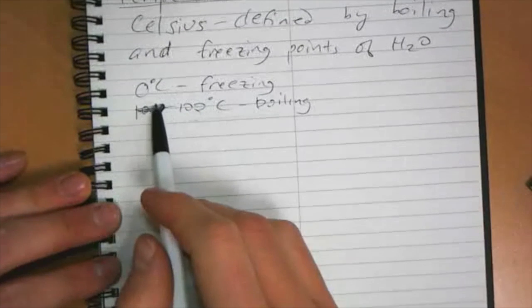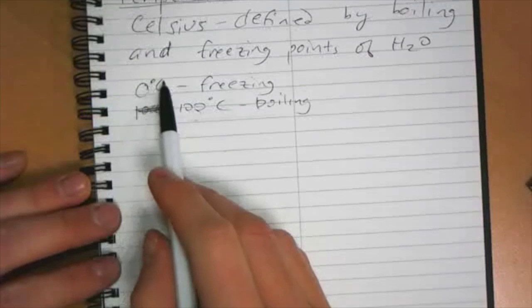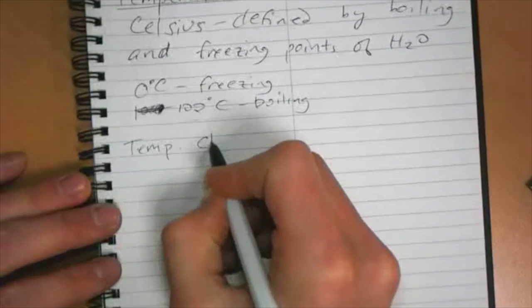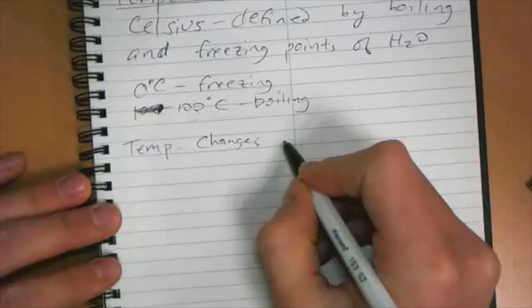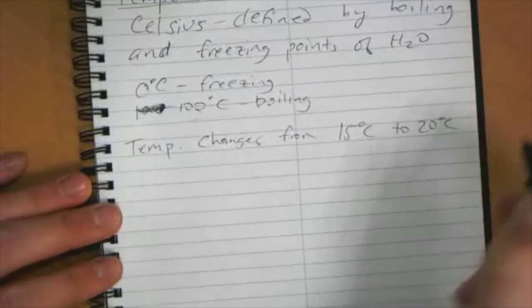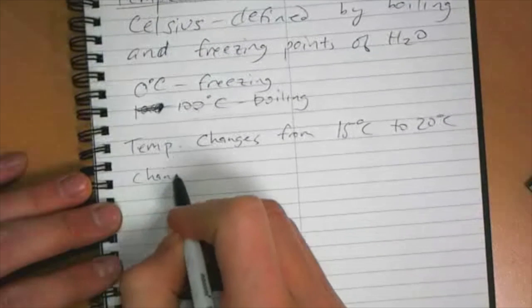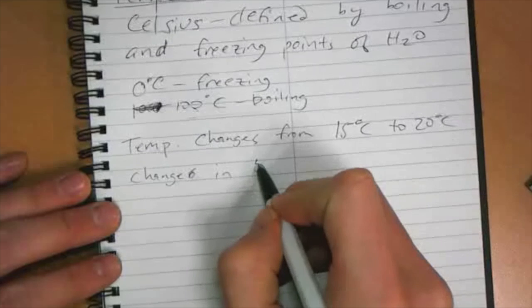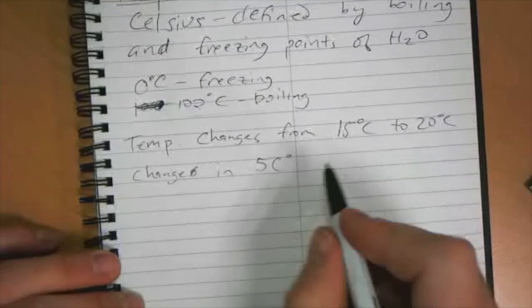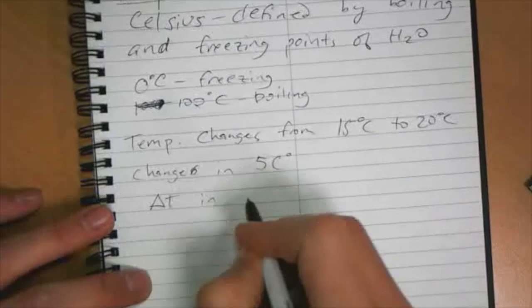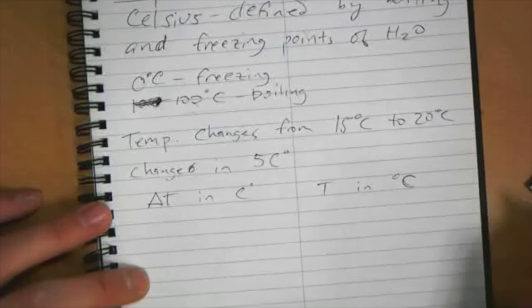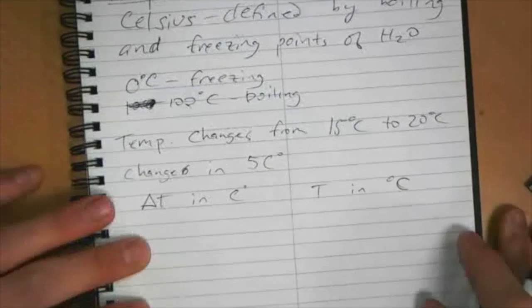A strange little fact: if we have a temperature change, say the temperature changes from 15 degrees Celsius to 20 degrees Celsius, the change is 5 Celsius degrees. So a temperature change is given in Celsius degrees, while temperature is just given in degrees Celsius.